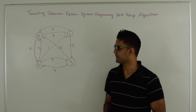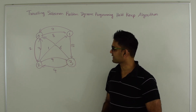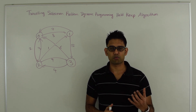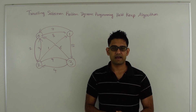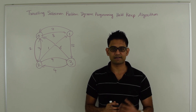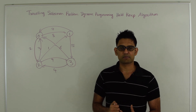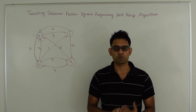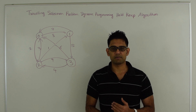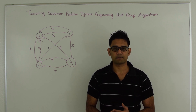So what is the Traveling Salesman Problem? Let's say we have a graph with weights on the edges. The idea is to find the minimum weight route which starts from a vertex, travels every other vertex exactly once, and then ends at the start vertex. This is basically finding a minimum weight Hamiltonian circuit in the graph. Traveling Salesman Problem has many applications but it is also an NP-hard problem.